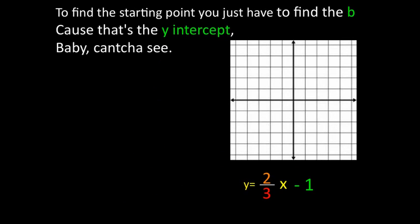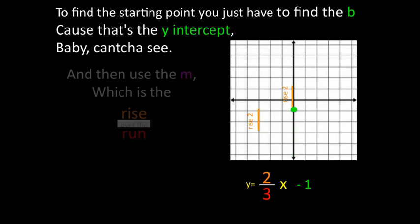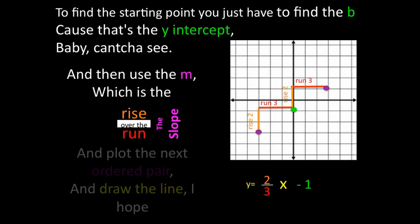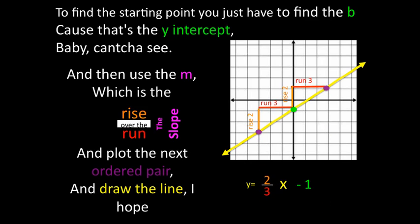To find the starting point, you just have to find the B. Cause that's the Y intercept, baby, can't you see? And use the M, which is the rise over the run, the slope. And plot the next order pair, and draw the line, I hope.